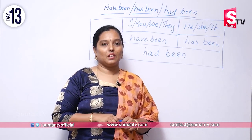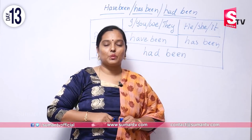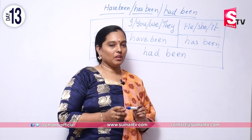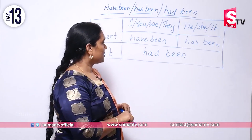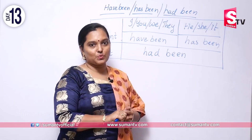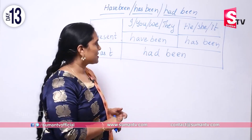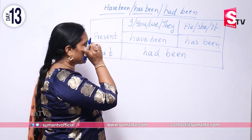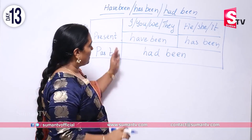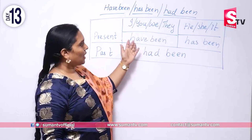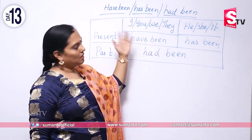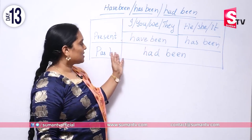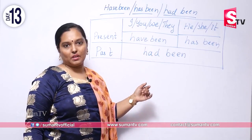I will talk about 'have been' and 'has been' — how much usage they have. So, the first structure: in present tense, I, you, we, they use 'have been.' He, she, it uses 'has been.' In past tense, for all subjects, it is 'had been.'